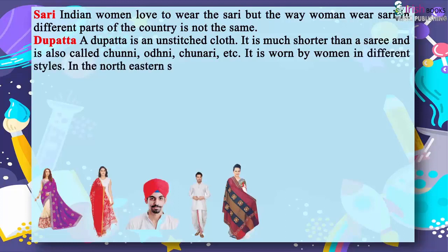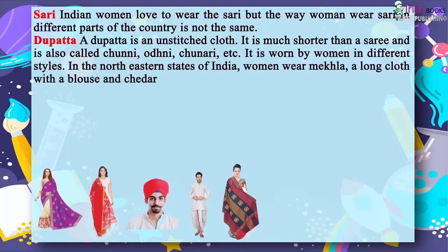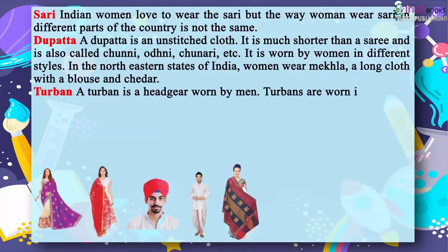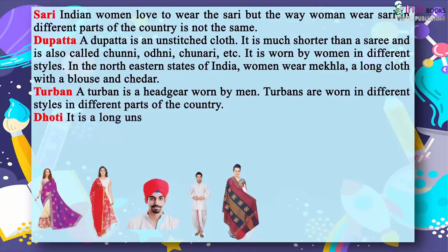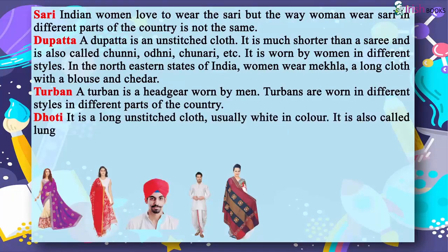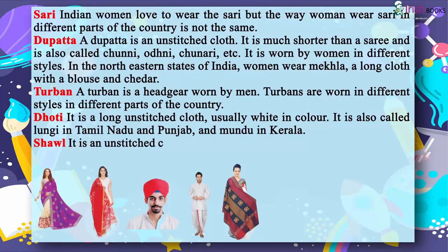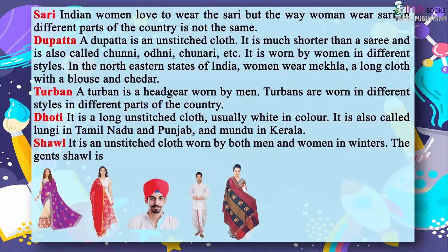In the north eastern states of India, women wear mekla, a long cloth with a blouse and a cheder. A turban is a headgear worn by men, and turbans are worn in different styles in different parts of the country. Dhoti is a long unstitched cloth, usually white in colour. It is also called lungi in Tamil Nadu and Punjab, and mundu in Kerala. A shawl is an unstitched cloth worn by both men and women in winters. The gent's shawl is called lohi.